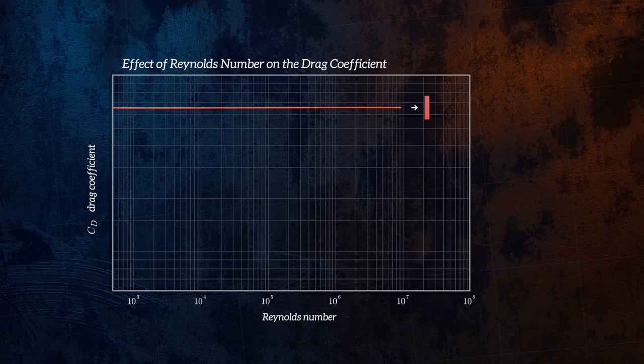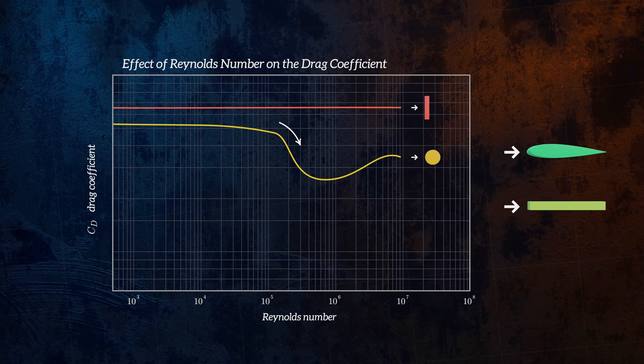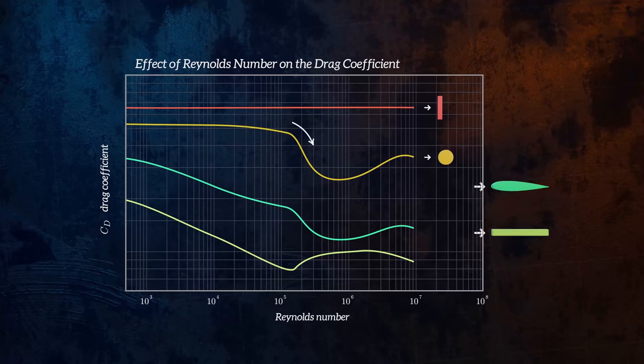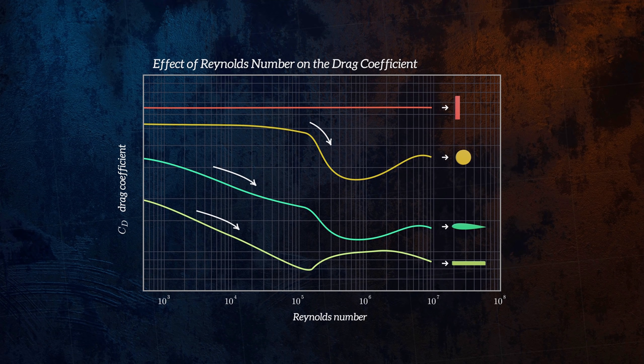For blunt shapes like this disc, we see a large decrease in the drag coefficient at the transition between laminar and turbulent flow, because flow separation is delayed when the boundary becomes turbulent, reducing the drag force. And for streamlined bodies, the drag coefficient reduces gradually as Reynolds number increases, since viscous forces are less significant at higher Reynolds numbers.